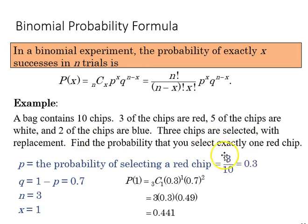Find the probability that you select exactly one red chip. Okay, so we know that out of the ten three are red, so there's three tenths. Express that as a decimal, and if we look at the pieces we need to plug in numbers for the formula.